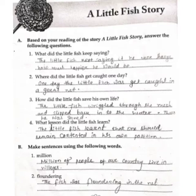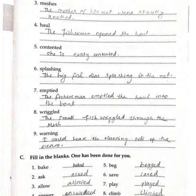Next, Number 5: Make sentences using the following words. First: Million — Millions of people of our country live in Belize. Number 2: Floundering — The fish was floundering in the net.